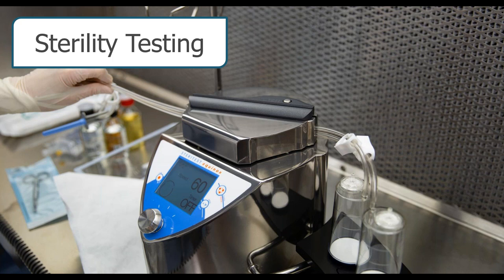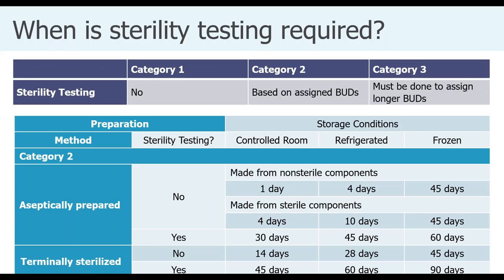Sterility testing requirements: category 1 requires no sterility testing; category 2 is dependent on the BUDs assigned; category 3 requires sterility testing—no exceptions. For category 2, aseptically prepared CSPs with sterility testing receive BUDs of 30, 45, or 60 days. Note that aseptically prepared includes the use of a sterilizing filter, as opposed to terminal sterilization using a device like an autoclave. Category 2 CSPs with terminal sterilization and sterility testing receive BUDs of 45, 60, or 90 days.